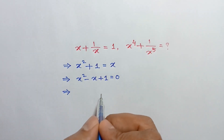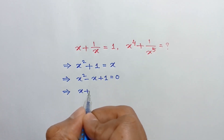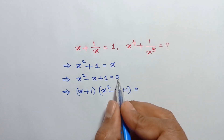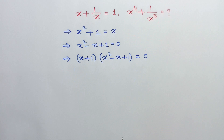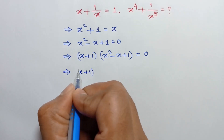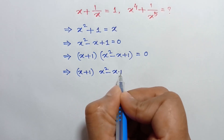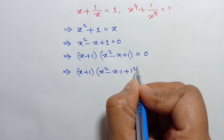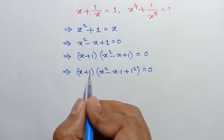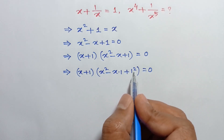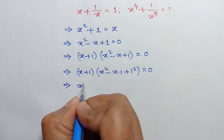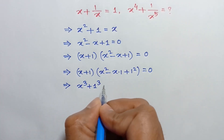Multiplying both sides by x plus 1, we can write x plus 1 times x squared minus x plus 1 is equal to 0. This can be written as x plus 1 times x squared minus x times 1 plus 1 squared is equal to 0. Now this is like the formula a plus b times a squared minus ab plus b squared equals a cubed plus b cubed, so according to this formula we can write it as x cubed plus 1 cubed is equal to 0.